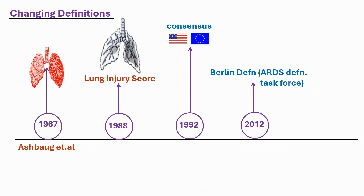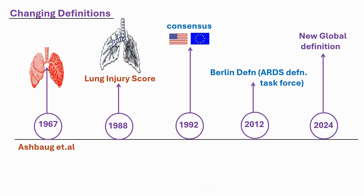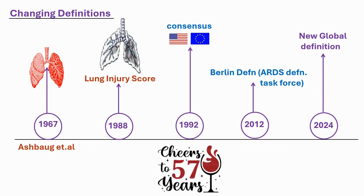We have been following PF less than 300, less than 200, less than 100, and so forth as the definition. Now in 2024 there is a new global definition. So from the last 57 years we are grappling with a simple definition of ARDS, and it has been very fluidic in nature in terms of how we identify it.